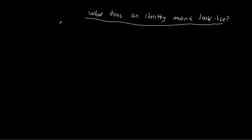To recap what we left off with before: we said that we have some square matrix A — square meaning that the number of rows and columns are the same — times this thing we were calling I, which we called the identity matrix. The whole point is that the identity matrix is the matrix equivalent of the number one, so that if we multiply A by the identity matrix, we get A back. This is the definition we are proposing: that I is the matrix equivalent of one.